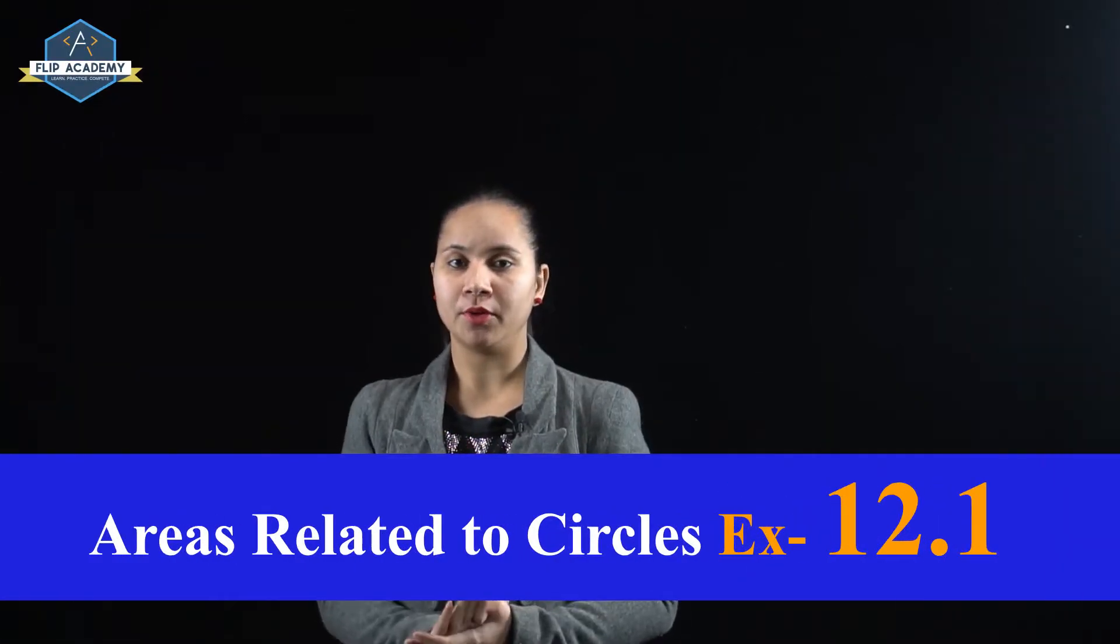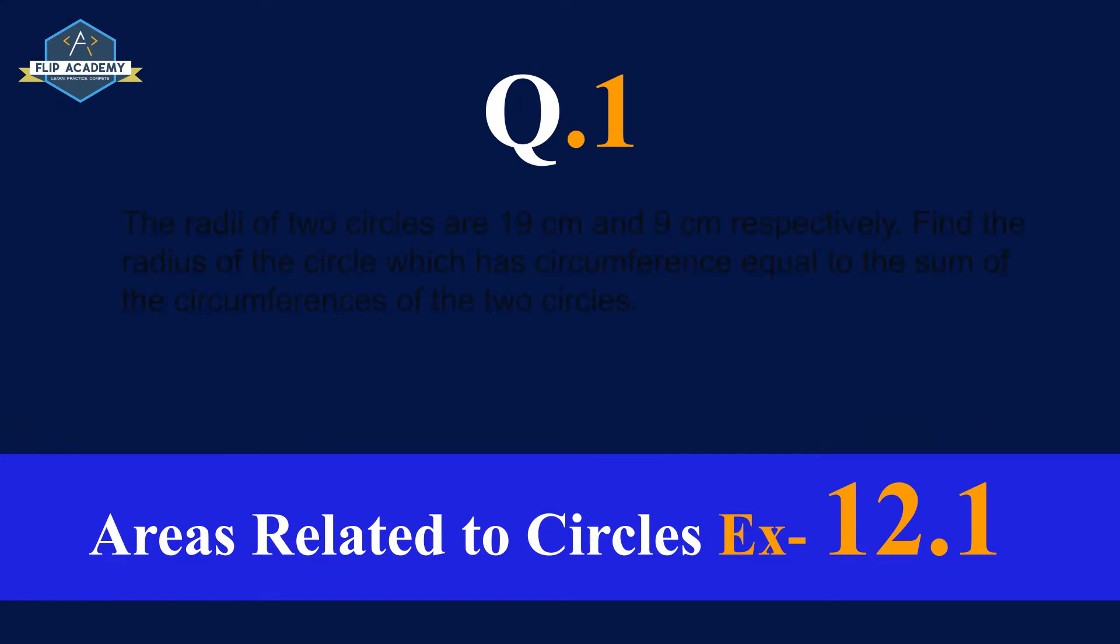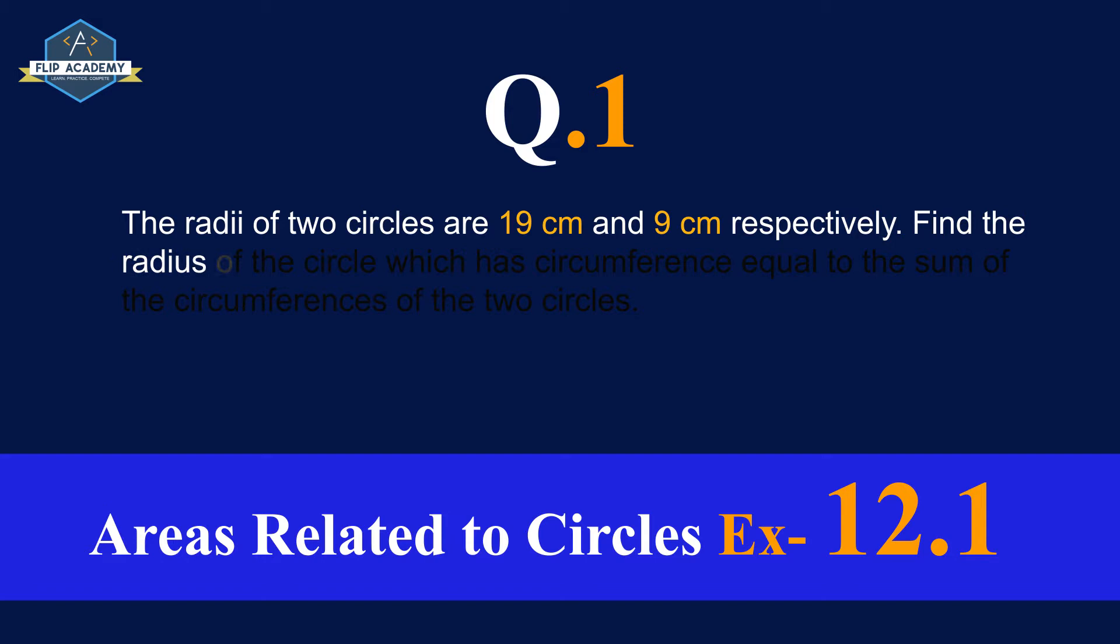Area related to circle exercise 12.1 question number one. The radii of two circles are 19 centimeter and 9 centimeter respectively. Find the radius of the circle which has circumference equal to the sum of the circumferences of the two circles.